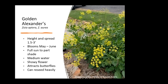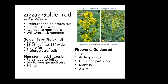Zigzag goldenrod was another one nominated by Will Beck. It prefers shade but will tolerate some sun, gets two to four feet tall and one to three feet wide, and takes average to moist soil. There are several types of goldenrods you can plant and cultivars like fireworks goldenrod selected for gardens — Fireworks has a really nice arching spray. Blue-stemmed goldenrod is very pretty, and then there's a shorter one called Golden Baby, 18 to 28 inches tall if you want one that stays shorter. Common goldenrod gets pretty huge and is fairly aggressive, so some of these others are not quite as aggressive in the garden.